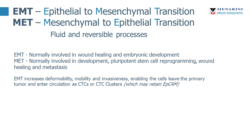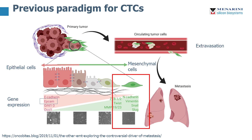We understand that EMT, or the epithelial to mesenchymal transition, is a fluid and reversible process, and the inverse is known as the mesenchymal to epithelial transition. The previous paradigm for CTCs was that when cells escape from the primary tumor and emerge into circulation, they had undergone a transition to a mesenchymal-like state. As you can see on this complex slide, cells in the tumor were more pink-like and the mesenchymal cells are more green-like, with a gradient of cell types in between and gene expression changes from epithelial-like to mesenchymal-like cells.